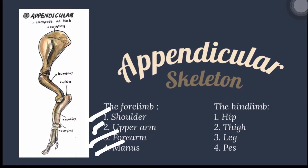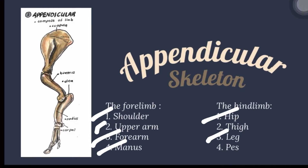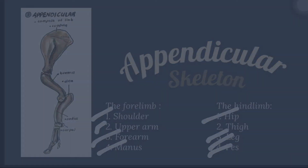The hindlimb is composed of the hip or the os coxae, or pelvic girdle, the thigh or the femur, the leg or the tibia and fibula, and the pes, which comprises the tarsals, metatarsals, and phalanges.